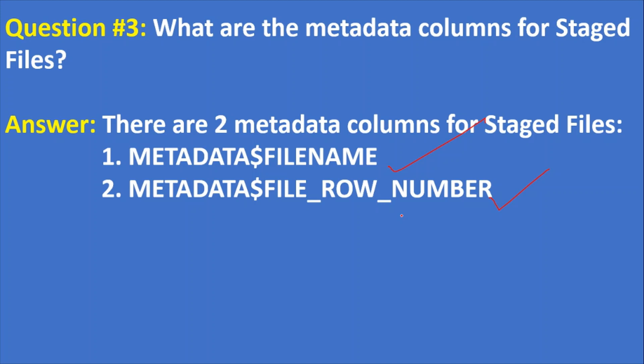Please note that these column values are not present in your source file. For example, your source file is the employee file. In the employee file we have three columns: employee ID, employee name, and salary. You create your employee table inside your database with those three columns plus file name and file row number, and you can use these two metadata columns to insert into your table.